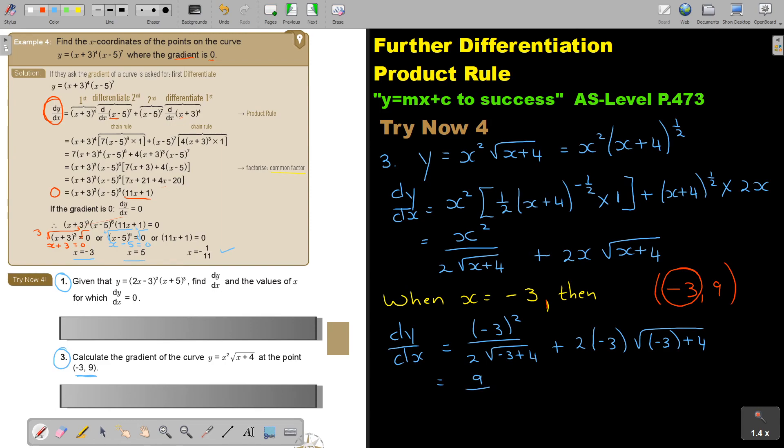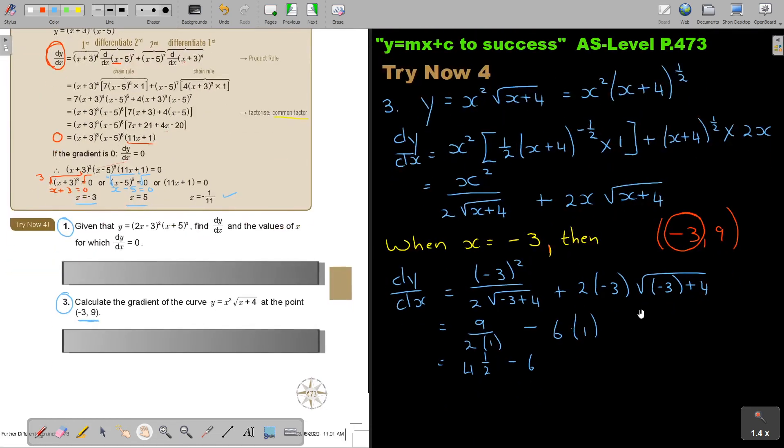And that is going to be 9 over 2, square root of 1 is just 1. I'll just put the 1 here. It's going to become a negative, so negative 6. And it's again just going to be square root of 1, so 1. So it's going to be, in this case, 9 over 2 is going to be 4 and a half minus 6.